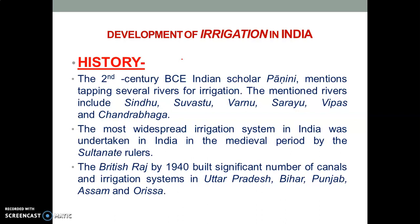Irrigation in India can be traced as far back as the Indus Valley civilization, which we studied in the first lecture of this unit. After that, there were many developments in irrigation. In the second century BC, Indian scholar Panini mentions tapping several rivers for irrigation — the mentioned rivers are Sindhu, Suvastu, and so on. So the idea of tapping rivers for irrigation existed as far back as the second century BC.